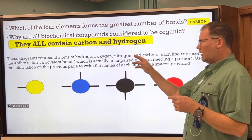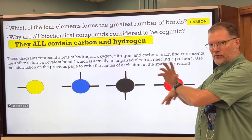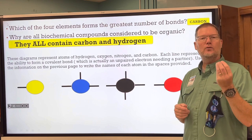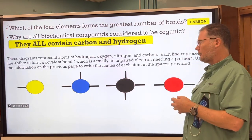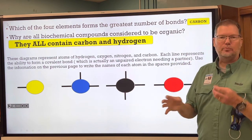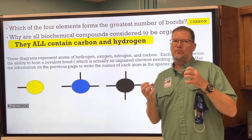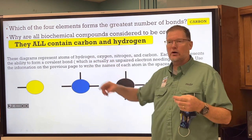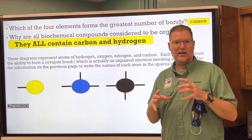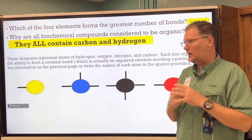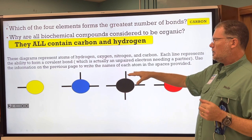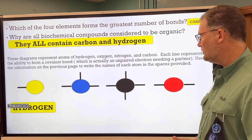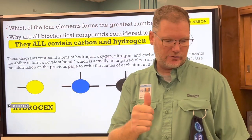These diagrams represent atoms of hydrogen, oxygen, nitrogen, and carbon in random order. Each line represents the ability to form a covalent bond — actually an unpaired electron that needs a partner. From physical science, you know valence electrons need a total of two for hydrogen or eight for any other atom. The first one is hydrogen because it has one line — it can form one bond. You'll do the rest by yourself.